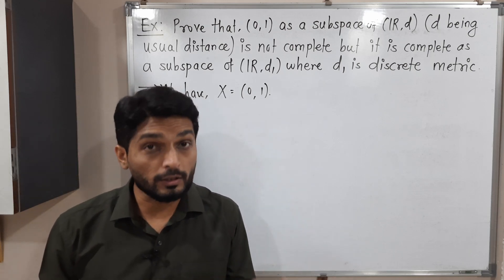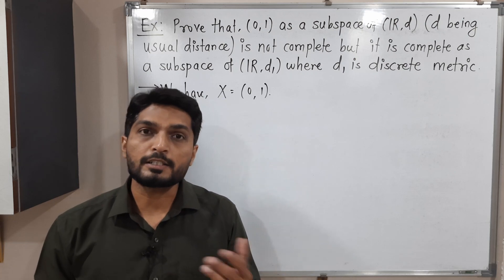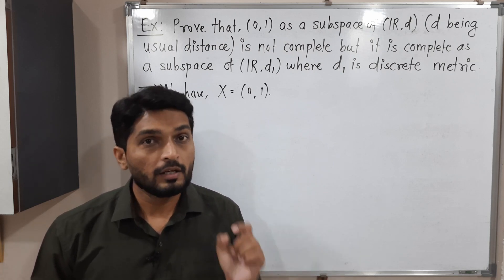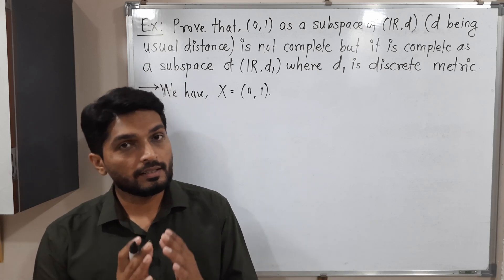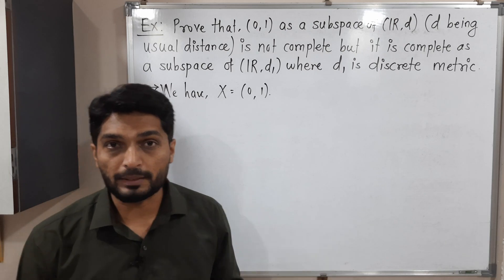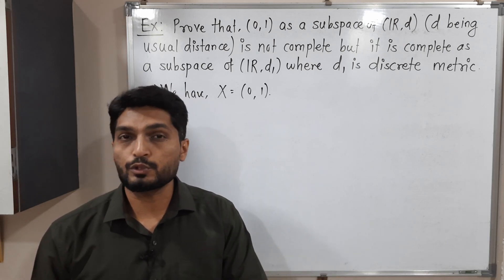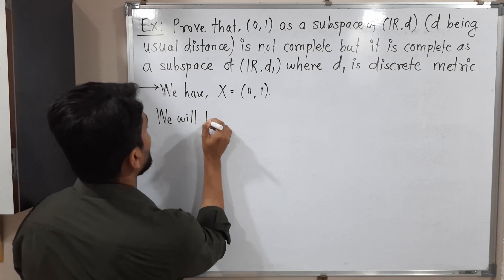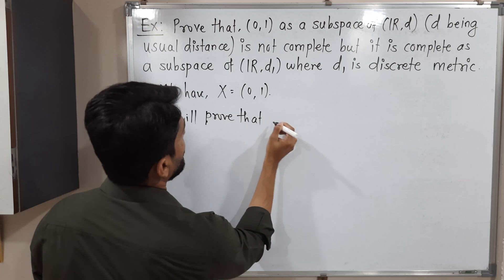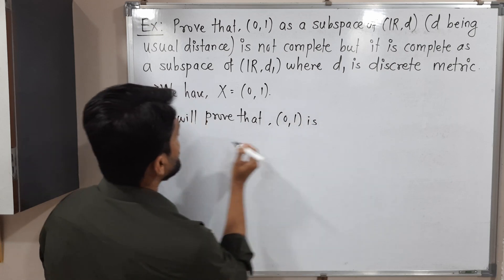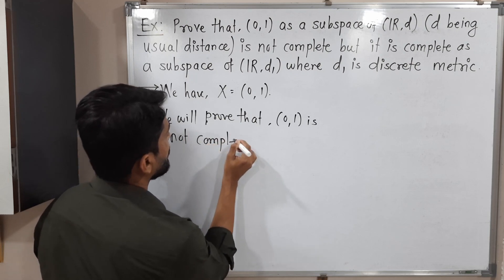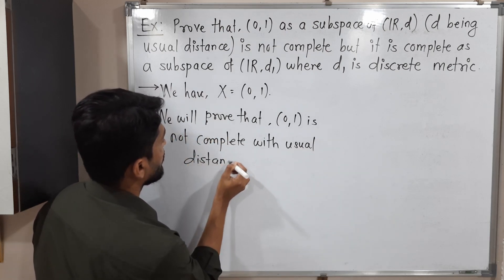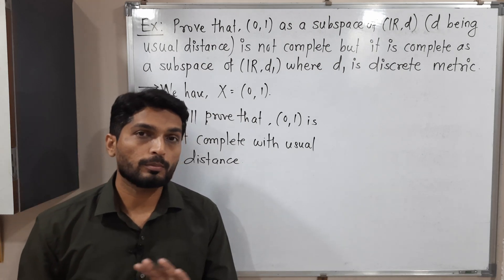So first we have to prove it is not complete with the usual distance. When we say a metric space is not complete, if we can find a Cauchy sequence which is not convergent, then we say it is not complete. If every Cauchy sequence is convergent then it is complete. Here we have to prove it is not complete, so we should find a Cauchy sequence which is not convergent.